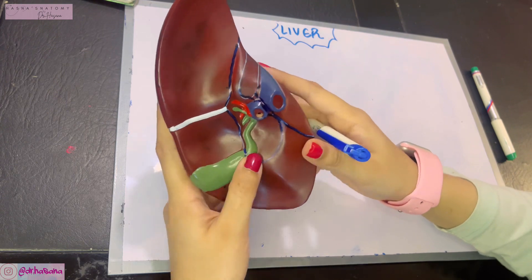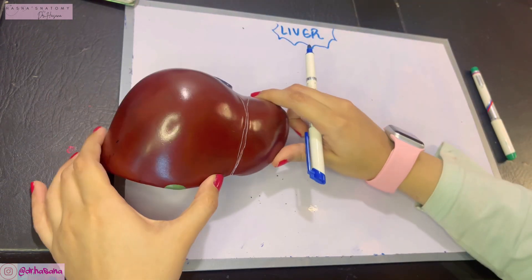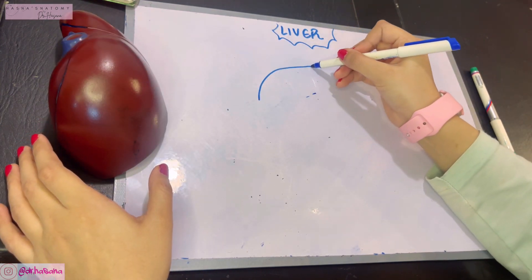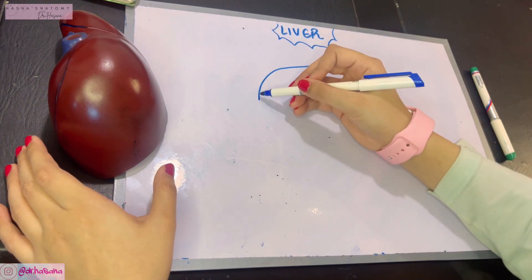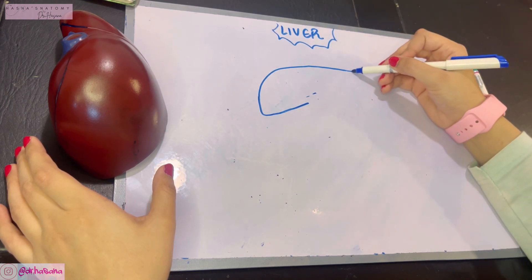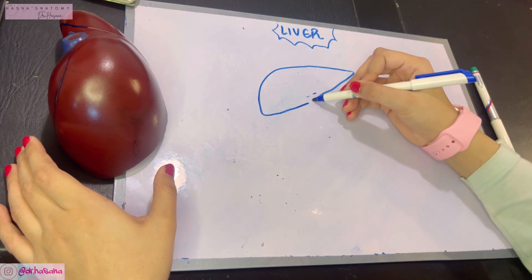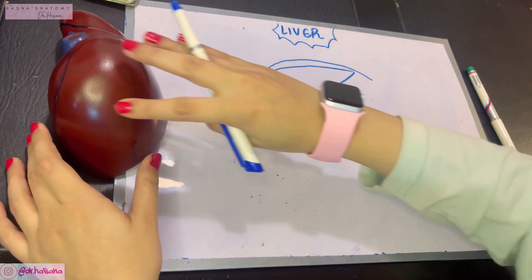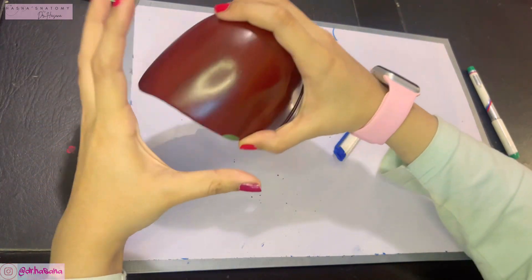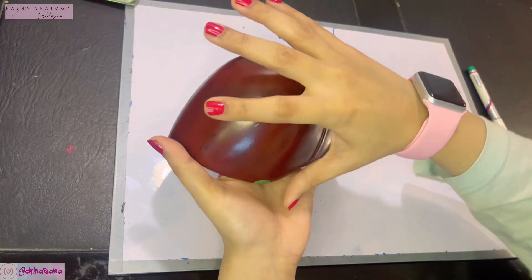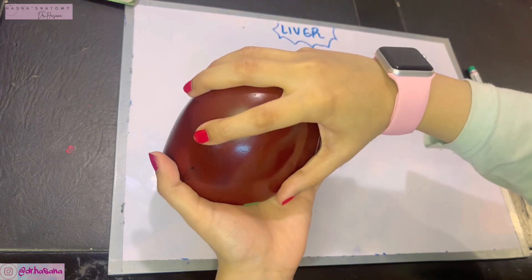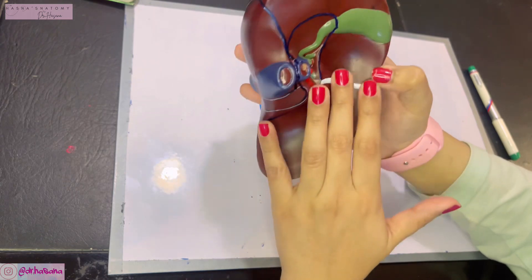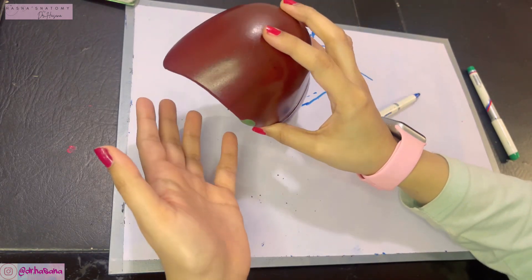The liver is located in your right hypochondrium and also occupies some part of your epigastric region, extending somewhat into your left hypochondrium. It lies directly beneath the diaphragm — most of its surface is covered by the diaphragm. Overall, the liver is divided into a diaphragmatic surface, which is completely covered by the diaphragm, and a visceral surface, which lies in relation to the various viscera of the abdominal organs.